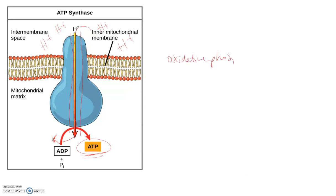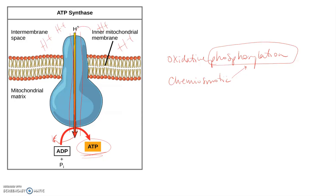This whole process is called oxidative phosphorylation or chemiosmotic phosphorylation. Remember, phosphorylation just means the addition of a phosphate molecule, which is what we see happening when phosphate is added onto ADP to get ATP. Oxidative and chemiosmotic refer to the driving force for that reaction.